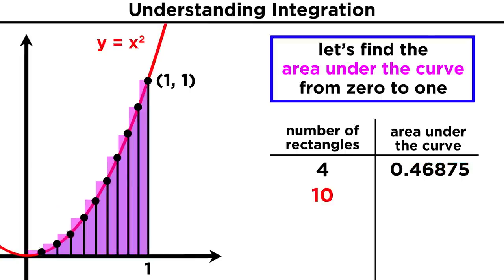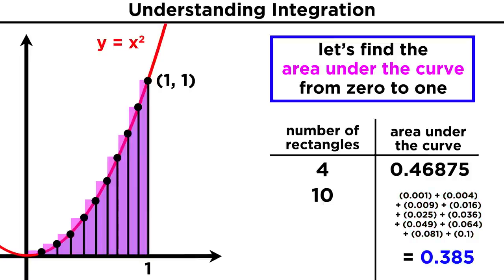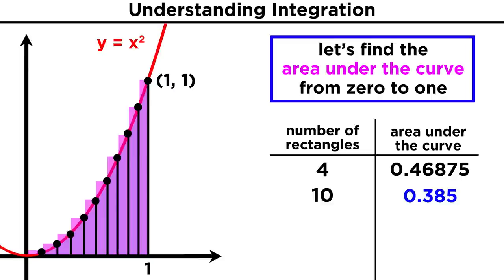But now let's use ten rectangles, and see what that gives us. These rectangles will all have a base of one tenth, as well as the following heights, and therefore these corresponding areas. Again, we simply add up the areas, and we get zero point three eight five. This looks like it is much closer to the area we are looking for, because the rectangles don't stick out past the curve as much as before.